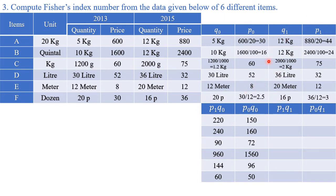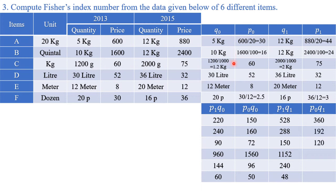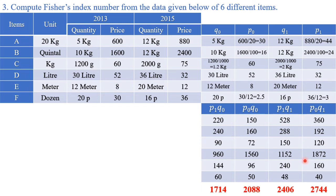For p1·q1 — current year prices × current year quantities: 44×12, 24×12, 75×2, 32×36, 12×20, 3×16. For p0·q1 — base year prices × current year quantities: 30×12, 16×12, 16×2, 52×36, 8×20, 2.5×16. Now make totals of all four columns: p1·q0, p0·q0, p1·q1, and p0·q1.